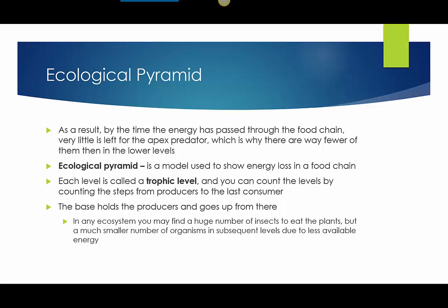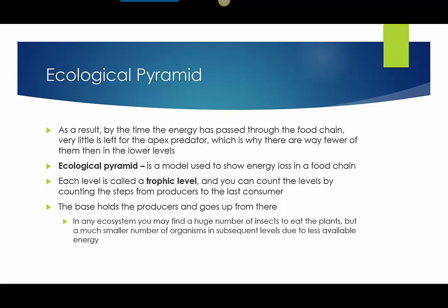The ecological pyramid is another model — we've talked about models in terms of our nested circle diagrams. The ecological pyramid is used to show energy loss in a food chain. Each level in that pyramid is called a trophic level, and you can count the levels by counting the number of steps from producers to the last consumer. I'll show you an example on the next slide.